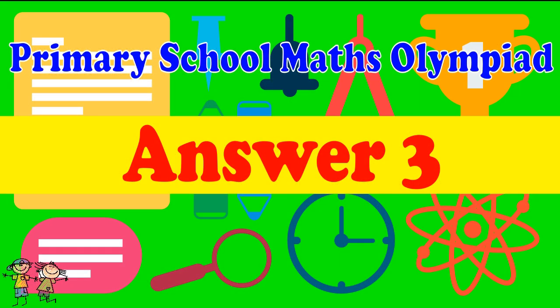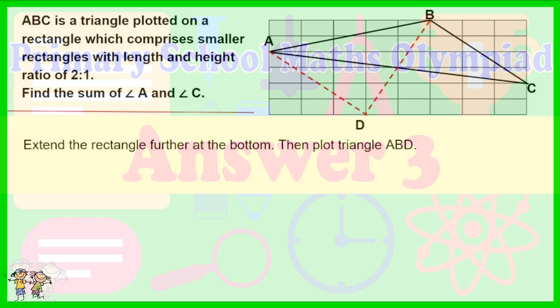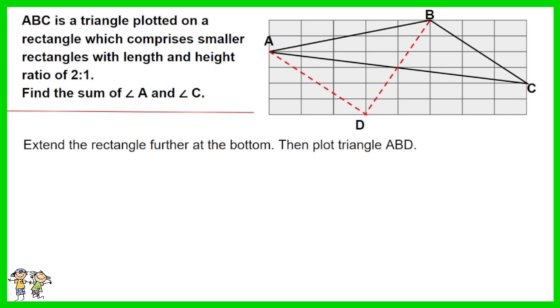Answer for question 3: Extend the rectangle further at the bottom. Then plot triangle ABD. As AD equals BD and angle D is 90 degrees, thus ABD is an isosceles. As such angle B is 45 degrees.